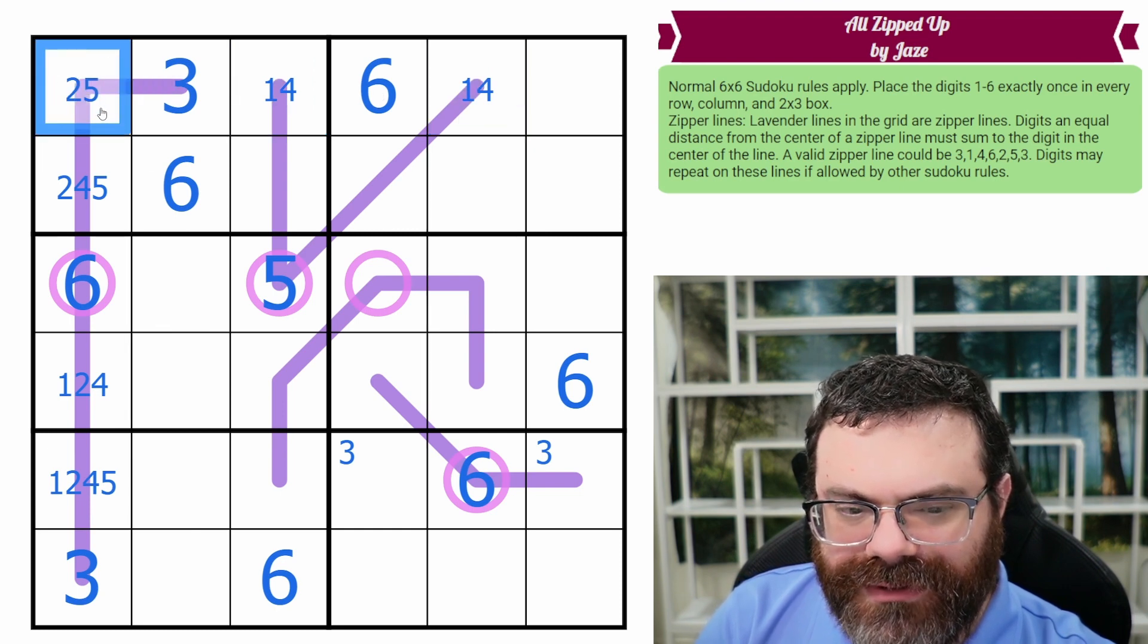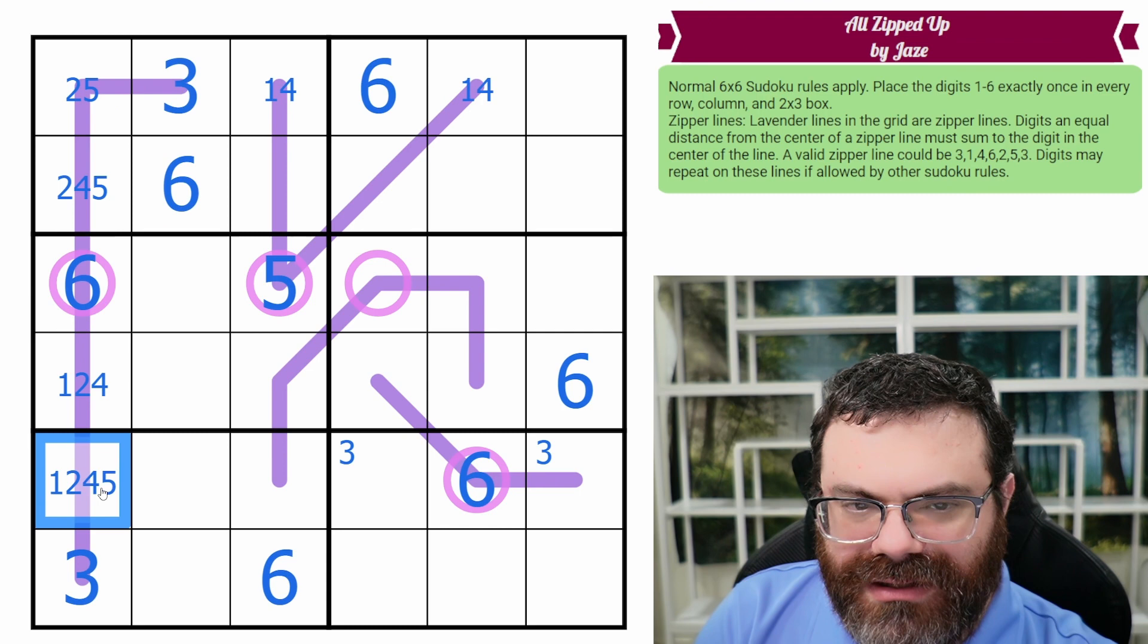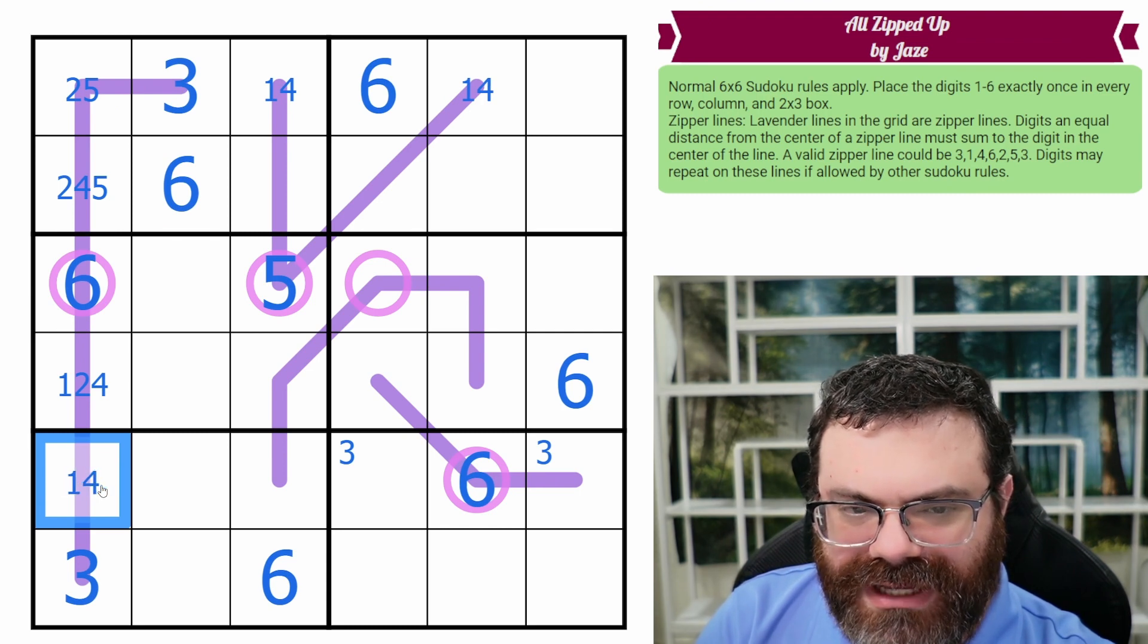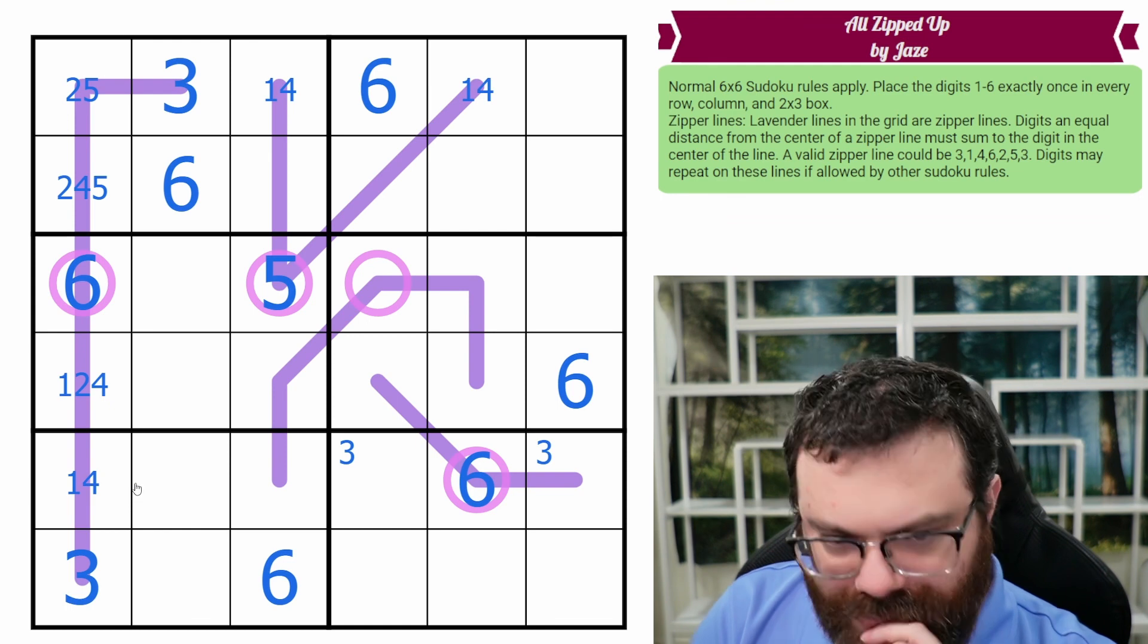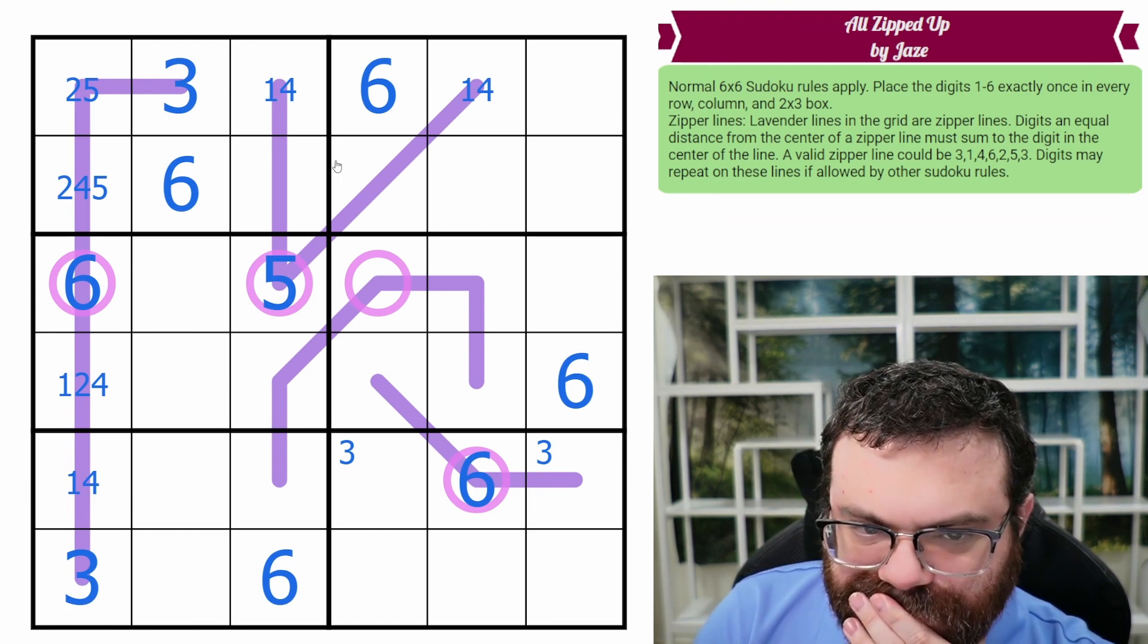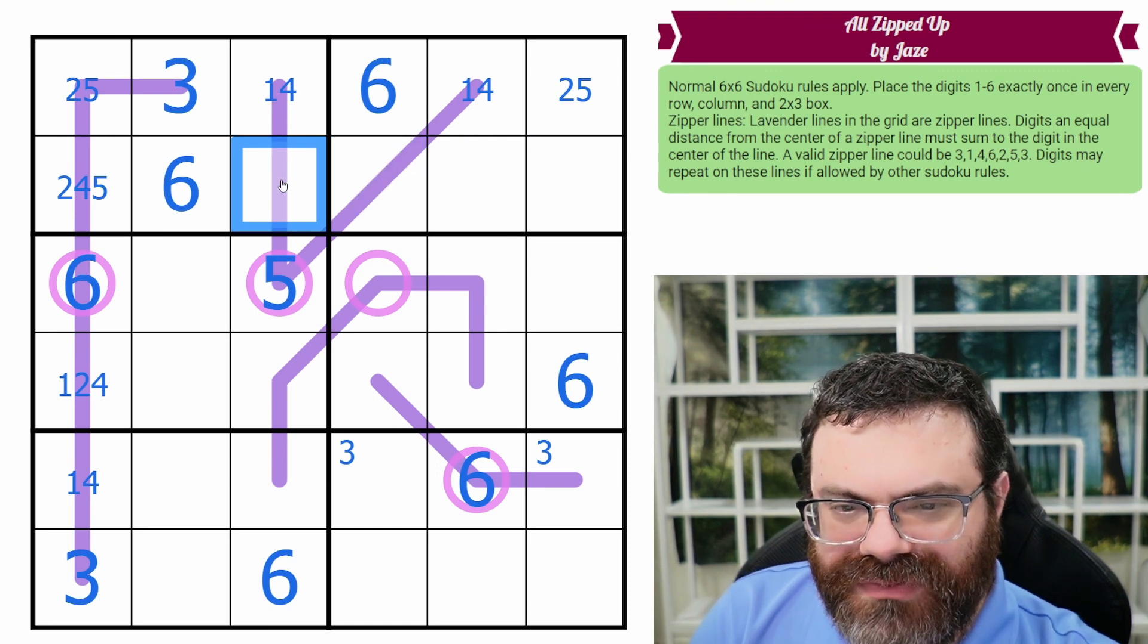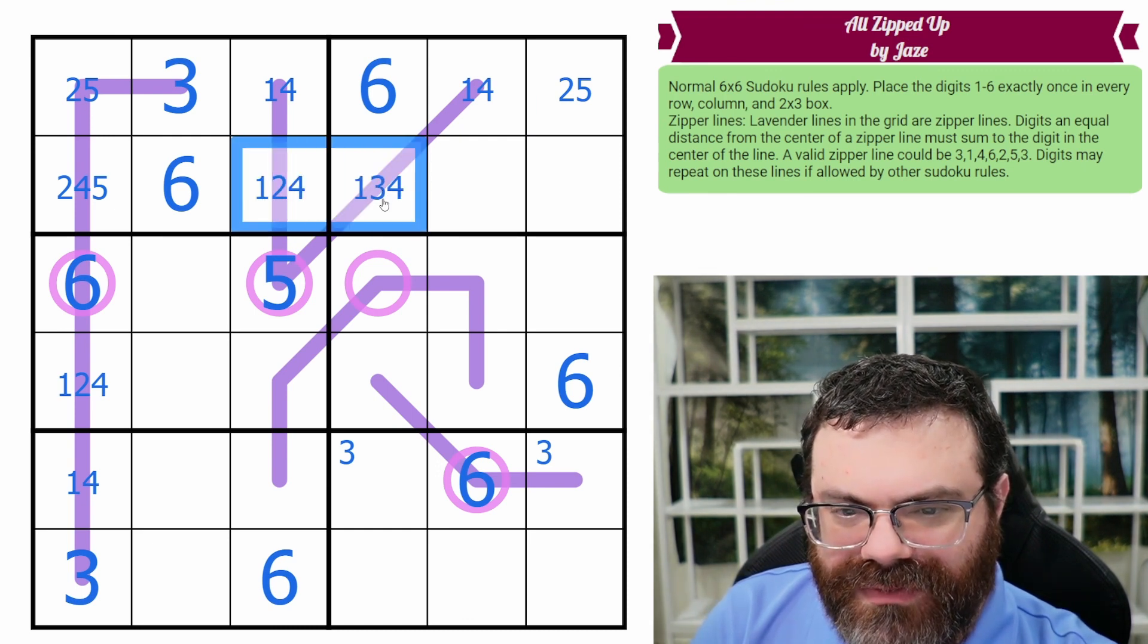So this is not one or four, which means on this end, this is not two or five. So this is two or five. This could be two plus three, but only this way, or it could be another one four pair.